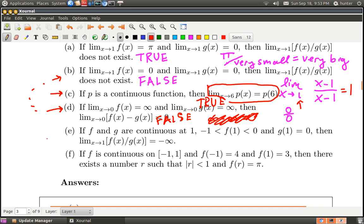Let's look at E. It says if f and g are continuous at 1, f(1) is negative, and g(1) is zero, then the limit as x goes to 1 of the quotient is negative infinity. You might think this must be true because g is going to zero and f is always negative—something negative over something going to zero should be negative infinity. This is probably the most subtle and sneaky question on this list. The answer is false.